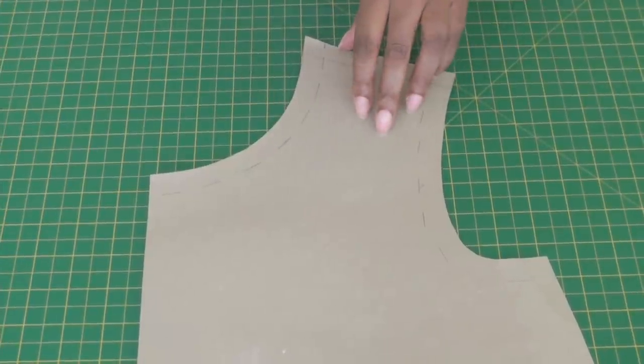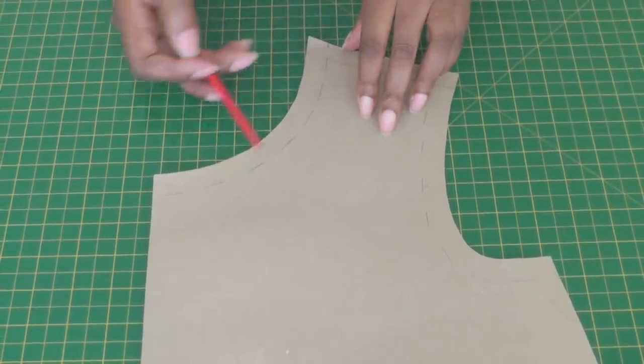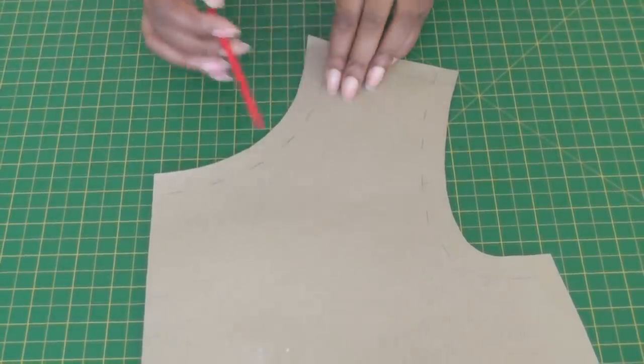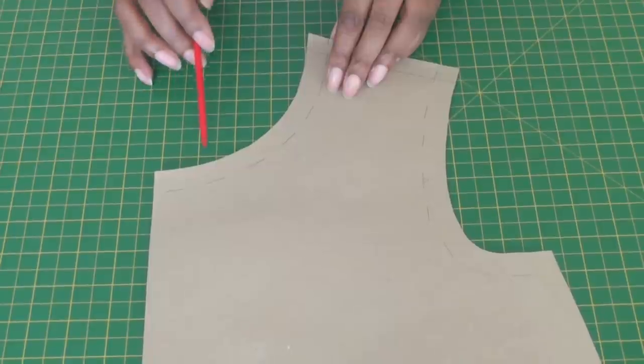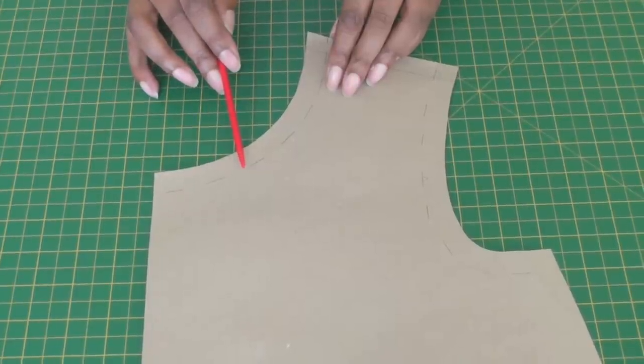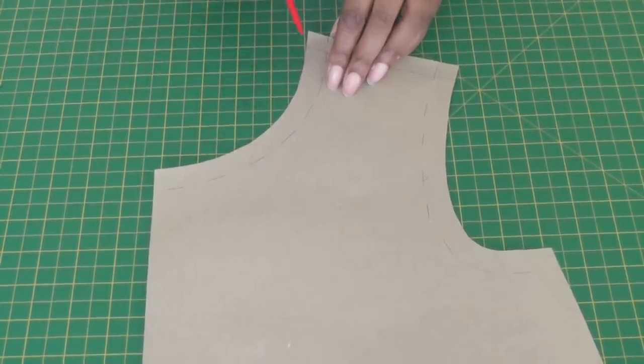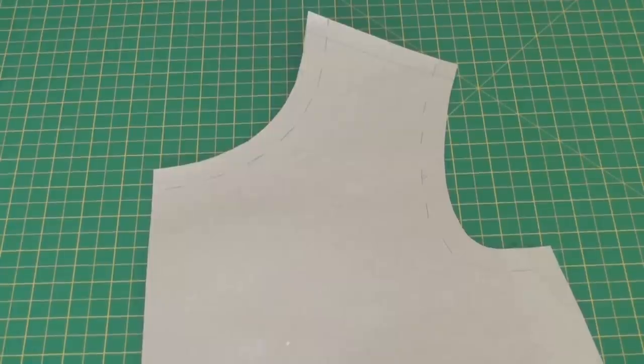Here we have the bodice front. Here's the neckline and here's the armhole. Now I would advise that you remove the seam allowance from the neckline because this provides you with a better fit. So I'll do that right now.